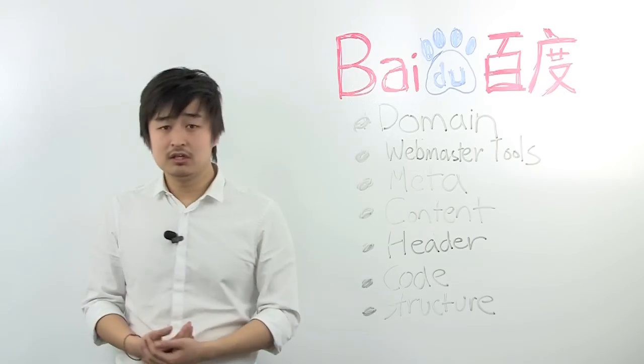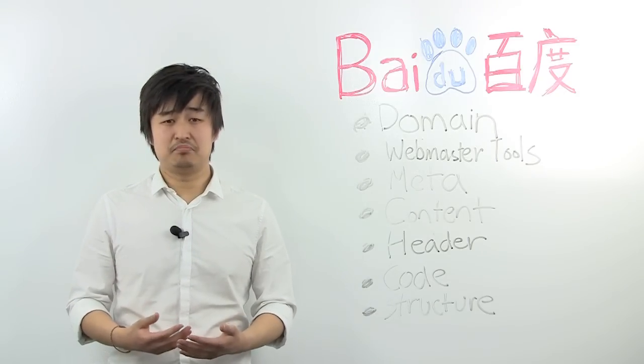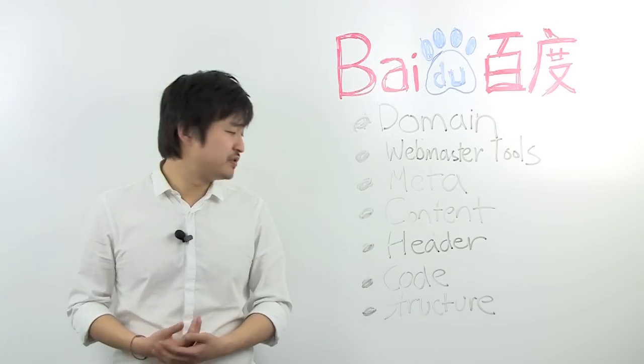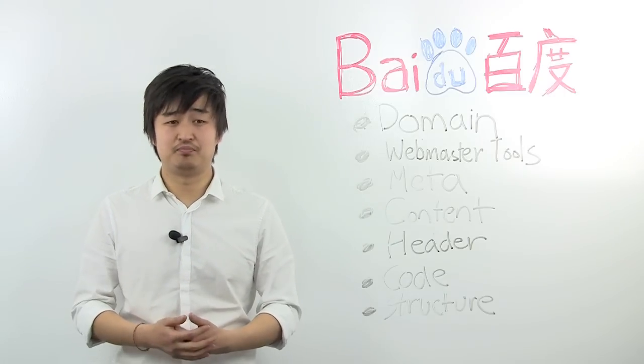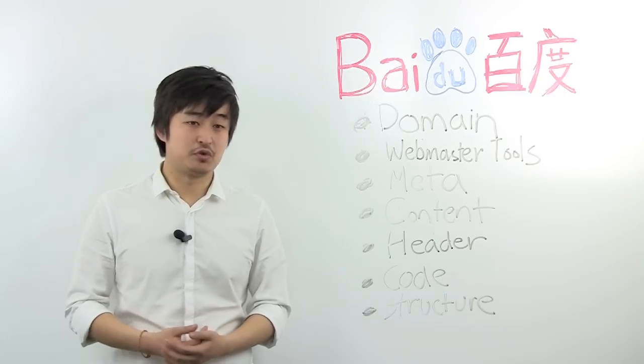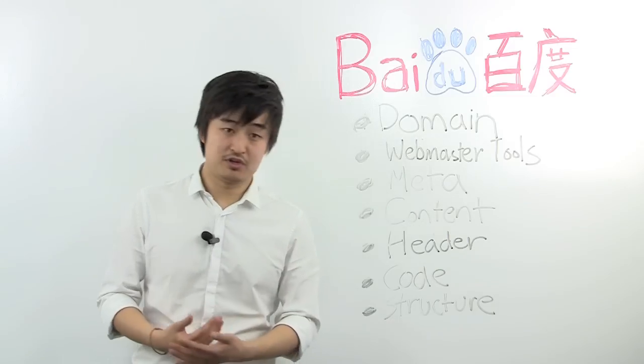Next up is header. Baidu plays the same, if not more, importance on on-page elements such as header and alt tags. Like I said before, their algorithm is not as advanced, so they rely on your website for information. Make sure these are optimized.